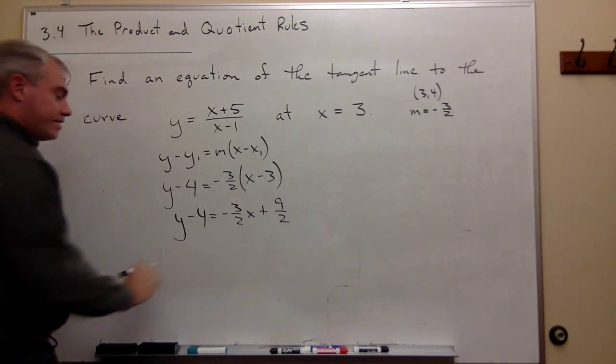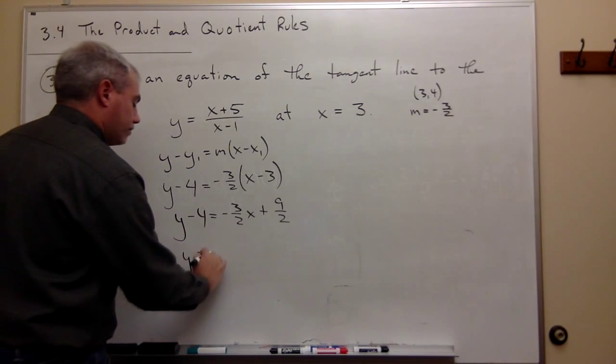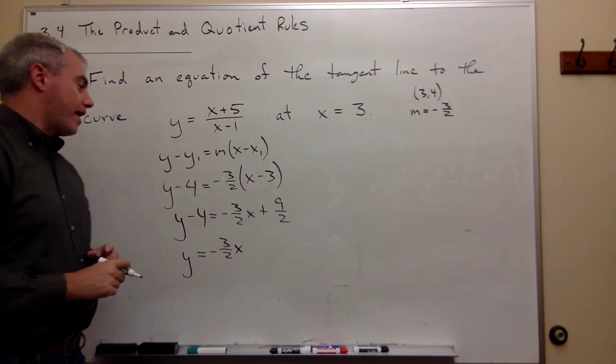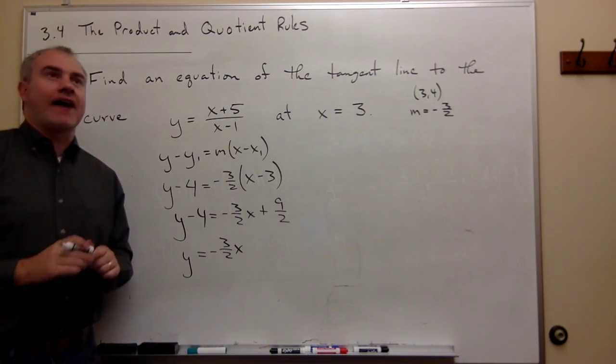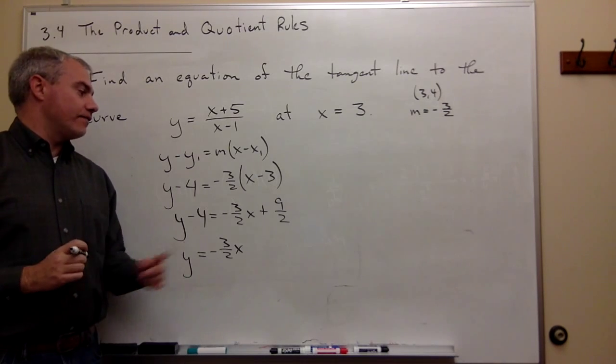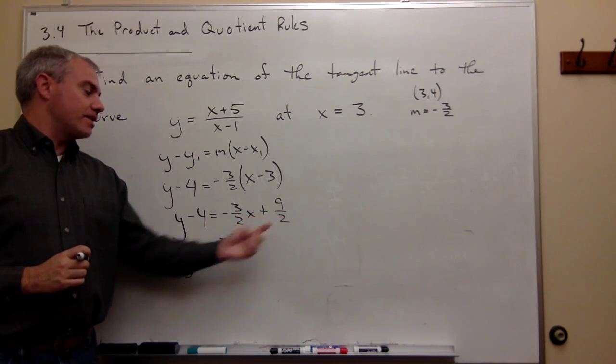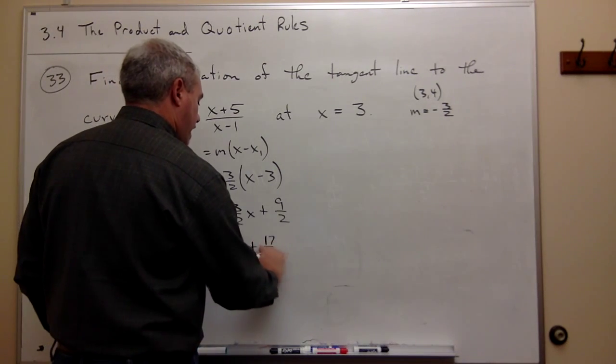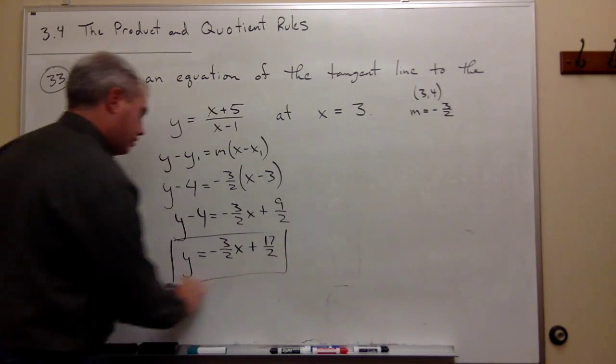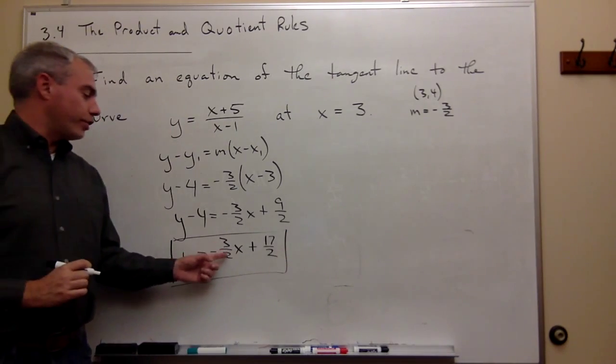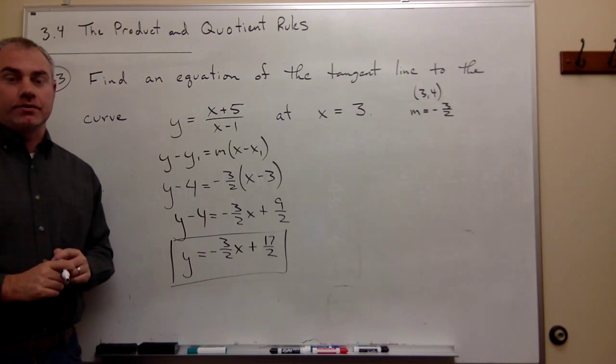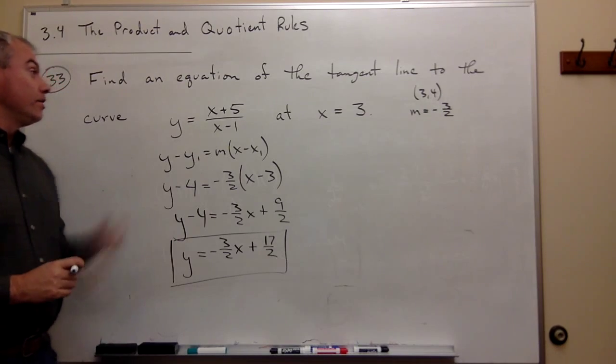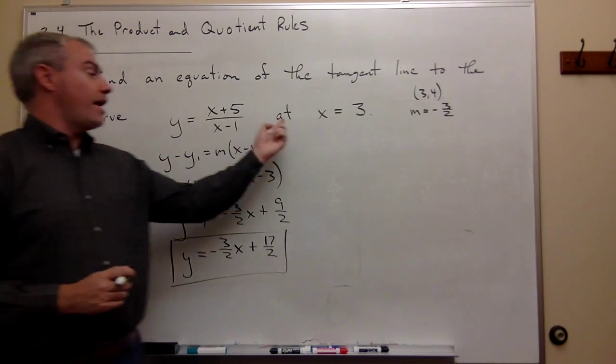Now add 4 to both sides, and we get y equals minus 3 over 2 x. And then I have to add 4 to 9 halves. 4 is 8 halves, and 8 halves plus 9 halves is 17 halves. So we get the line y equals negative 3 over 2 x plus 17 over 2. And that is the equation of the tangent line to this curve at this point.